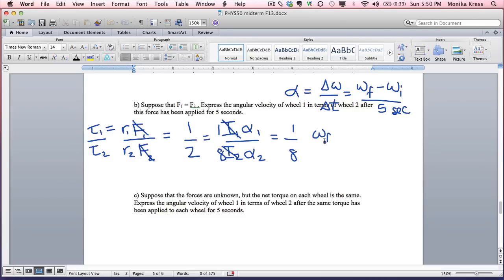Omega final minus omega initial, which we can say omega initial is equal to 0, over 5 seconds. So it's omega final over 5 seconds. Omega final 1 and omega final 2 divided by 5 seconds. The 5's go away. So what we've got in the end is that 1 half equals 1 eighth omega final 1 over omega final 2. So the ratio of omega 1 to omega 2 is equal to 4. This would be true regardless of whether your initial angular velocity was equal to 0 or not.